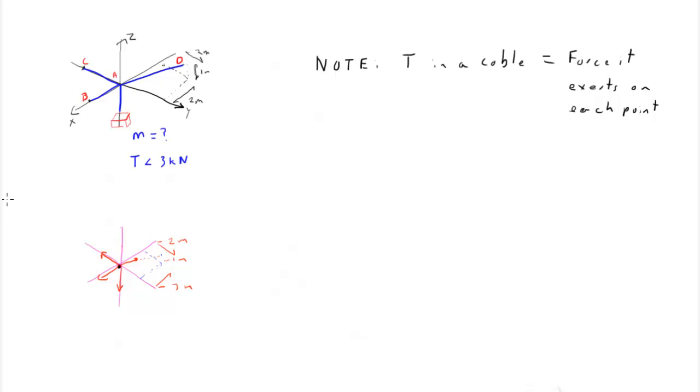So the other thing we have to do is label these. So we'll call this force C because it points in the C direction. This force we'll call force B because it points in the B direction. This would be force D because it points in the D direction. And I'm going to write that this is the weight of the crate. Tension in this cable is actually just equal to the weight of the crate. And that's one of the things that we're looking for. So this is our free body diagram.